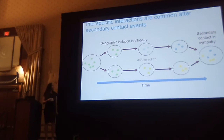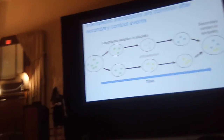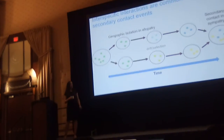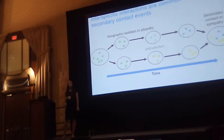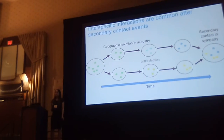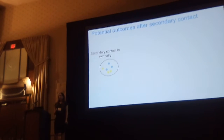These types of interspecific interactions might be most common after a secondary contact event. Here I'm depicting an ancestral population that is split in two due to some sort of geographic isolation barrier, and eventually these allopatric populations might come back together in secondary contact. We're really interested in what happens at secondary contact because it offers a unique opportunity to study the process of speciation, and there are multiple different outcomes that can occur.